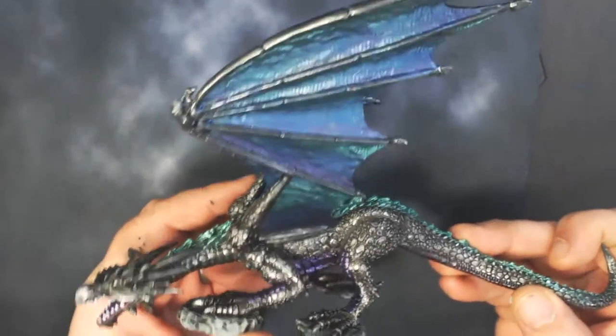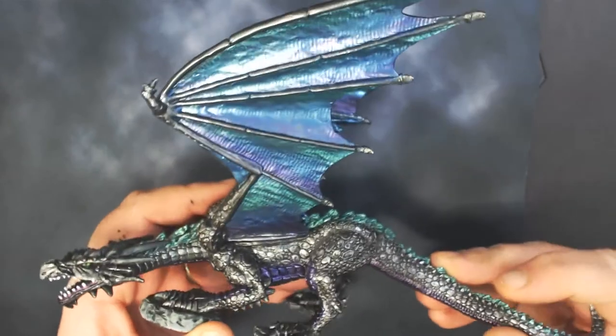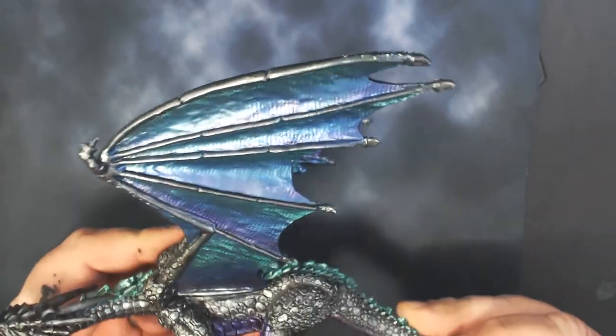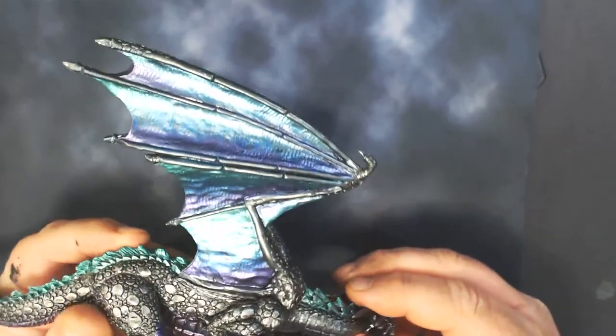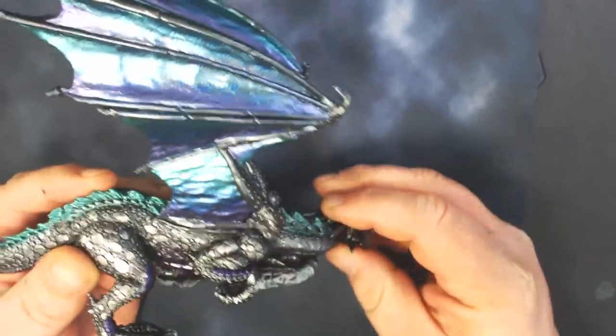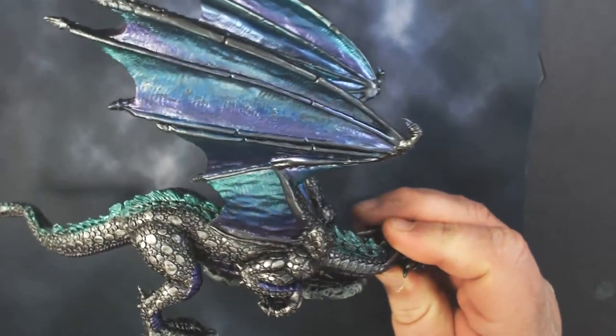And here I have my finished dragon. I just picked out some of the other parts of them using the same colors. Those I did with brush. And you can brush this on. It just takes a little more effort, but you can get the same effect with a paintbrush.